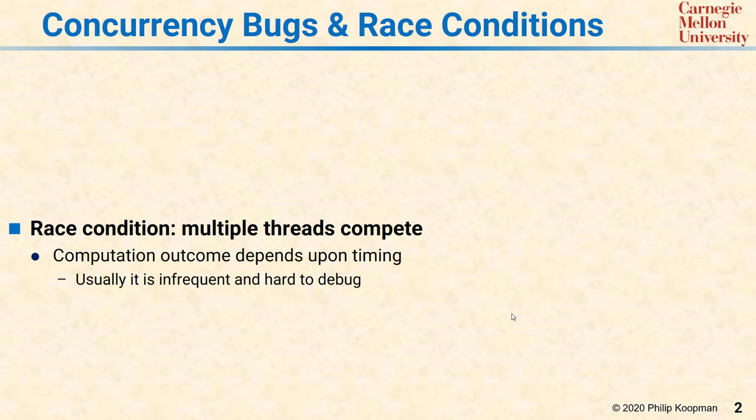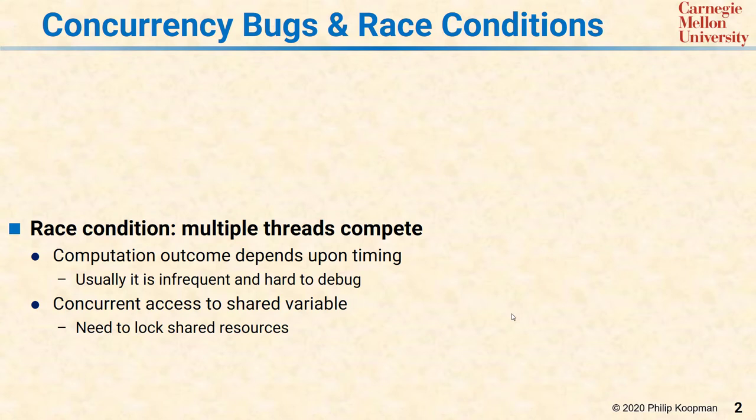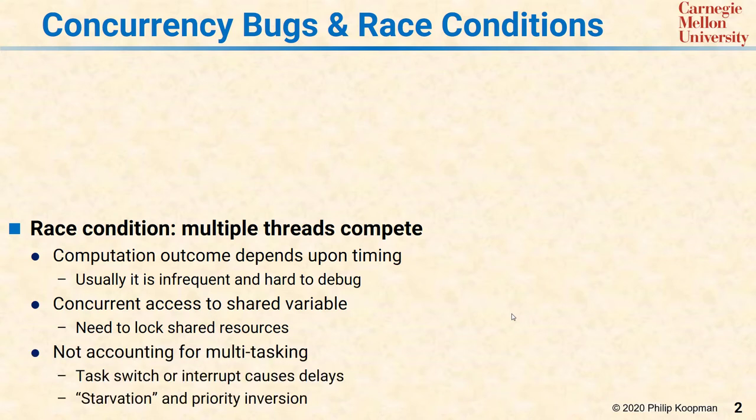One type of race condition is caused by concurrent access to a shared variable. Solving this requires locking shared resources, and we'll discuss this. Another type of concurrency bug comes from not accounting for the effects of multitasking on the performance of your system.